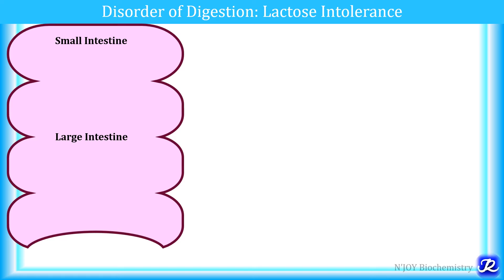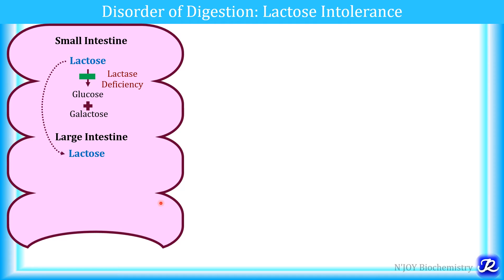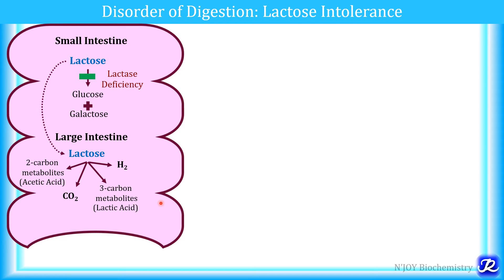This is lactose intolerance — it is a disorder of digestion. This is a schematic representation of the small intestine and the lower portion is the large intestine. When milk or any dairy product containing lactose is consumed, in the small intestine by the action of the enzyme lactase, lactose is metabolized into glucose and galactose. But if lactase is deficient, lactose will not be converted into glucose and galactose and it will reach the large intestine, where it is fermented and there is formation of acetic acid, which is a two-carbon metabolite, carbon dioxide, lactic acid, and hydrogen gas.